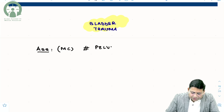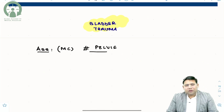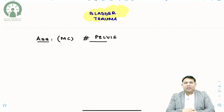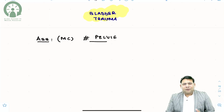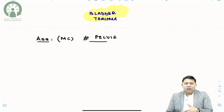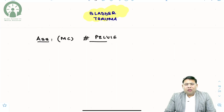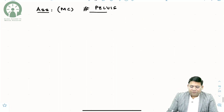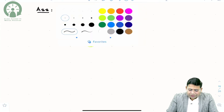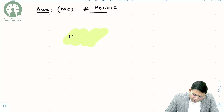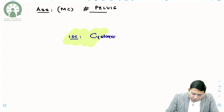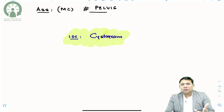Fracture of the pelvis is the most frequent cause of bladder trauma. An important thing to understand is how do we evaluate bladder trauma and what are the key points. When we talk about the investigation of choice, it is a cystogram — a cystogram is nothing but a radiographic study of the bladder.